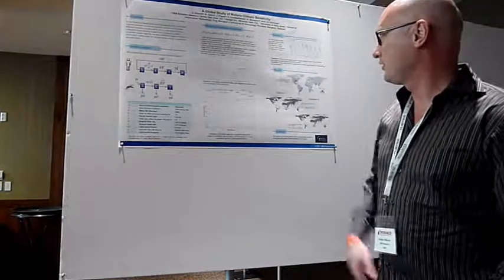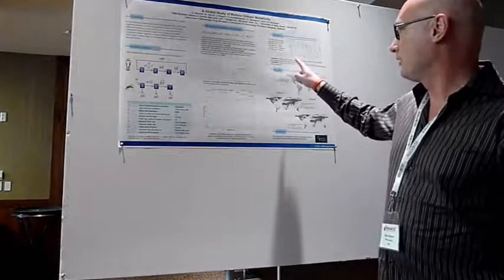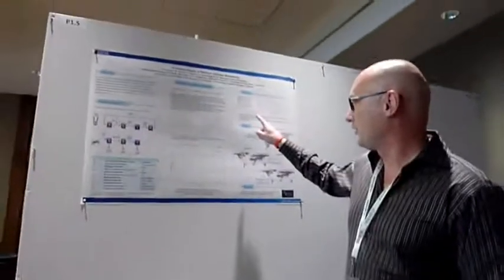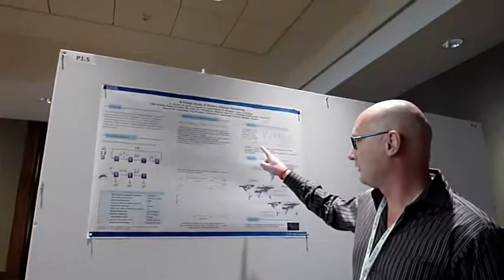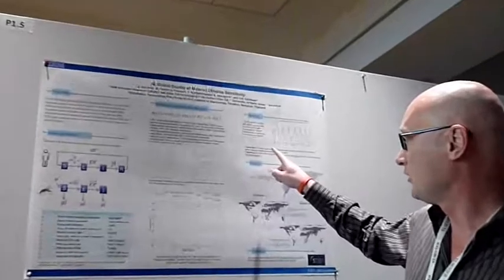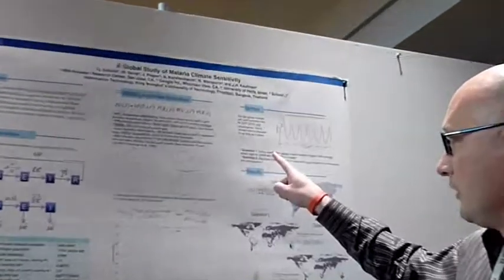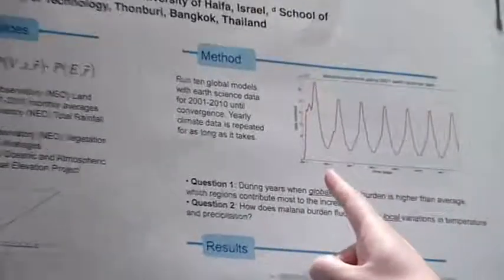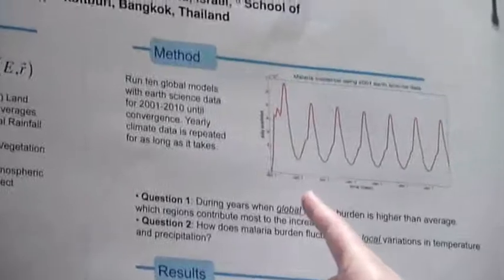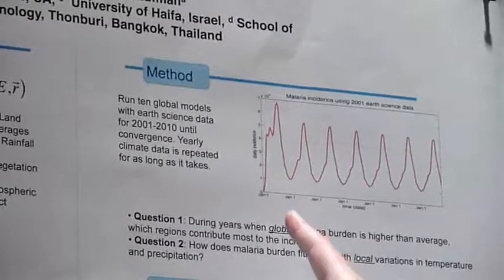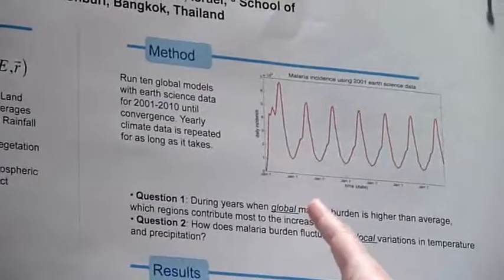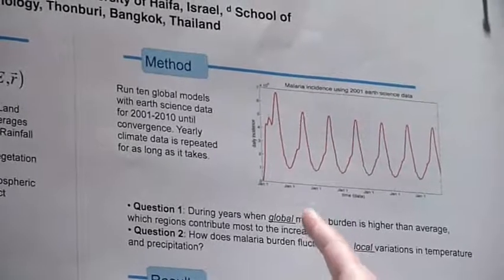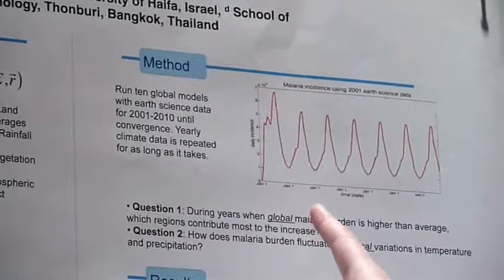This is essentially the method. We have ten years worth of data from 2001 to 2010 on earth science data. We take one year, for instance 2001, and we build a global patch model for the whole planet down to a resolution corresponding to about county levels for the United States.